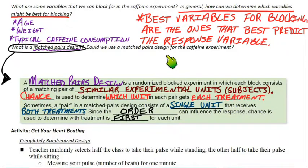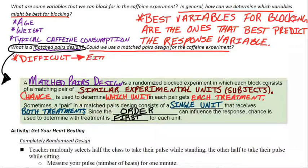So could we use a matched pairs design? Oh, right here. Don't go to the activity just yet. We're going to do that in class. Could we use a matched pairs design for the caffeine experiment? So could we either put people into really similar pairs or somehow take each individual and give them two different types of treatments? That would actually prove to be pretty difficult, I think, with the caffeine experiment.